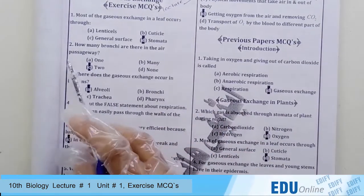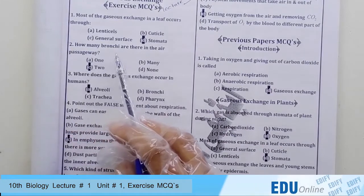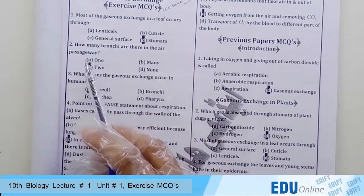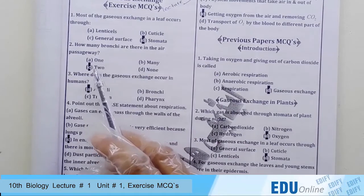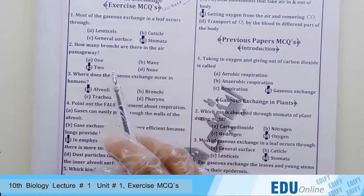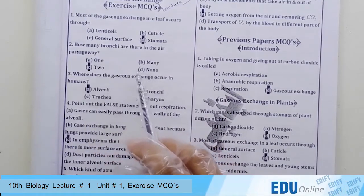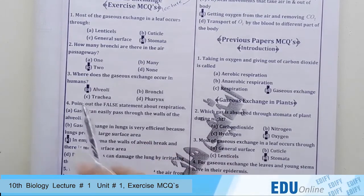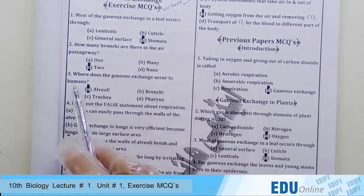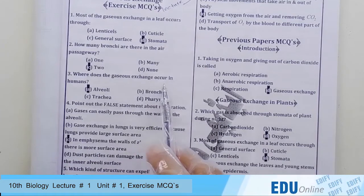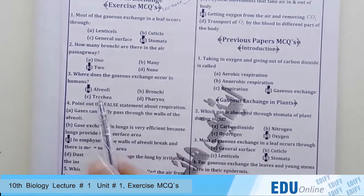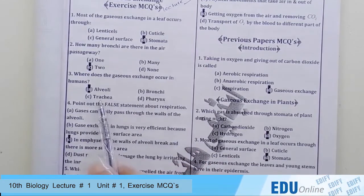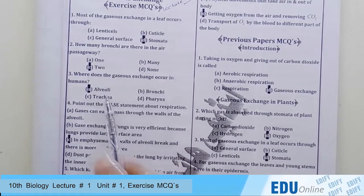Question number two: how many bronchi are there in the air passageway — one, many, two, or none? The answer is two. There are two bronchi. Question number three: where does gaseous exchange occur in humans — alveoli, bronchi, trachea, or pharynx?